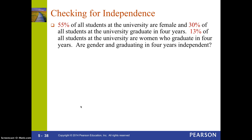It looks like there are two different things being discussed: female students and students who graduate in four years. So the first thing to do is write some probability statements. We see that 55% of all students are female, so the probability that you're female is 55%.